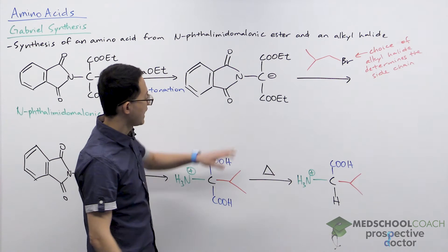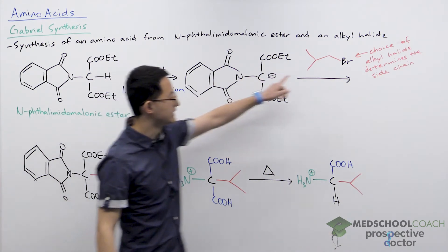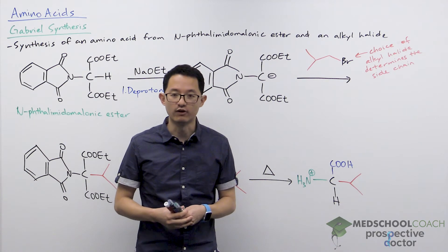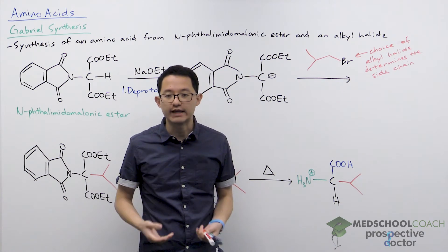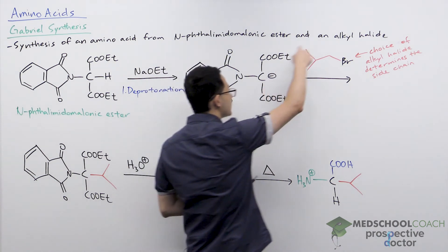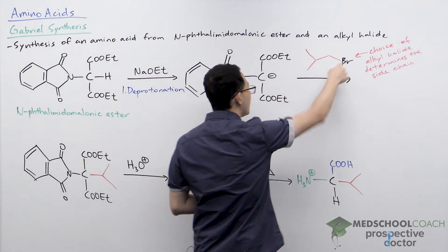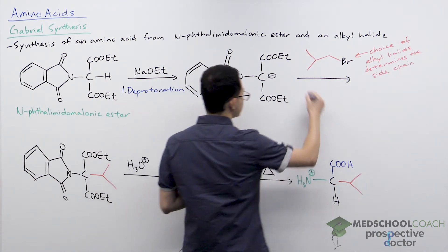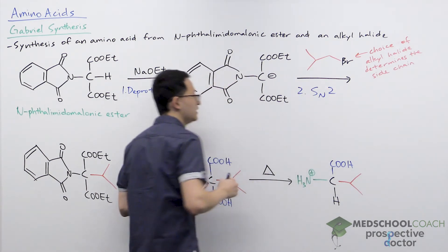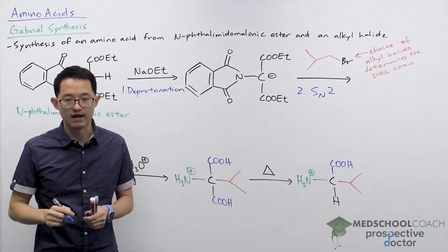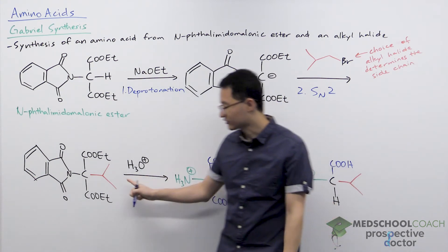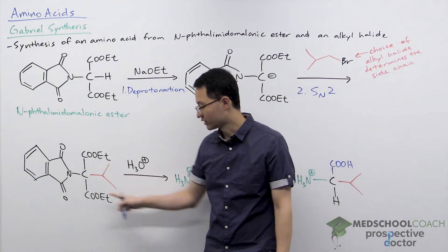When you have this nucleophile and this alkyl halide, this will remind you of a nucleophilic substitution reaction. The nucleophile is going to attack this carbon, kicking off the bromine, and this mechanism is an SN2 reaction — a single concerted step. Once this nucleophile attacks, you'll have added your side chain onto your molecule.